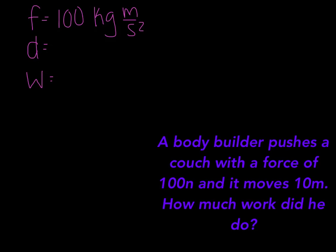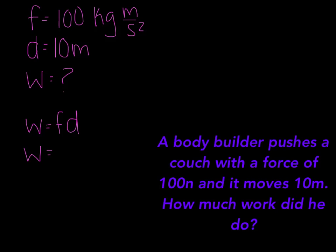The next part says distance — he moves 10 meters, so you put 10 meters. And for the work, we don't know, so we're going to put a question mark because it says how much work did he do. Then we're going to start the problem: write work equals force times distance. And then write work equals 100 kg meters over seconds squared times 10 meters.